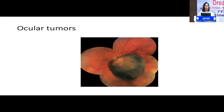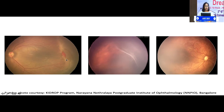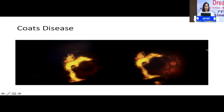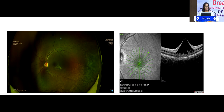In ocular tumors, we need to determine the location and size. Indirect ophthalmoscopy plays a very important role in pediatric vascular disorders like ROP — determining whether there is a demarcation line, a ridge, a neovascular frond leading to stage 3, or retinal detachment in stage 4. This is a classical picture of aggressive ROP. In Coats disease, we look for exudation and telangiectasias. In retinoblastoma, we determine the size, location, and number of tumors. This is juvenile X-linked retinoschisis with macular edema and peripheral retinoschisis.